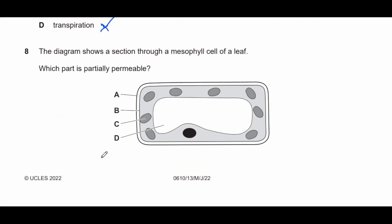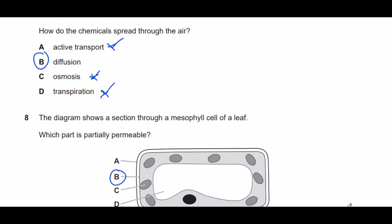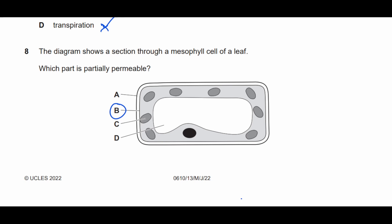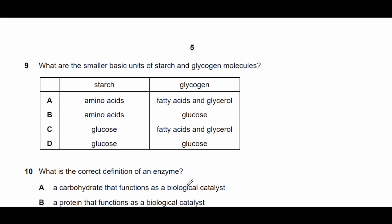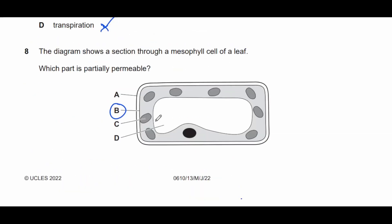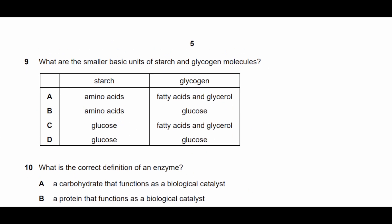Question eight: which part is partially permeable in this cell? The only partially permeable part would be B, because B controls what goes in and out of the cell. Therefore the answer is B.